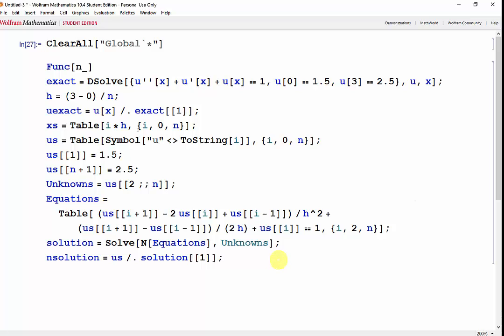Now we can make our table of differences. The TableOfDifference will contain the absolute value of nsolution[i] minus uexact evaluated at x = xs[i], where i goes from 1 to n+1.